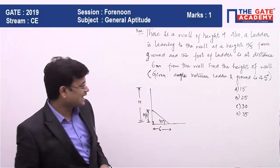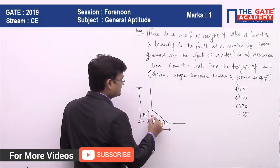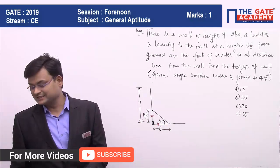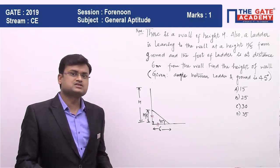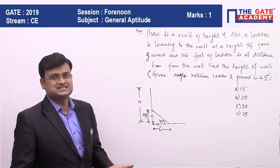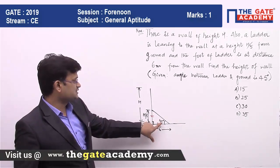This length and this length will be equal. You can use tan 45 formula also, but that talks the same. So since it is a 45-45-90 triangle, this and this will be same.